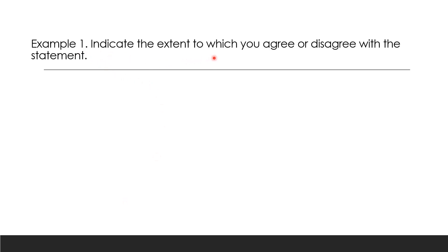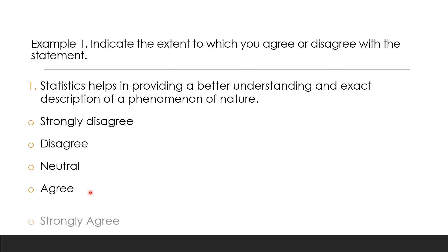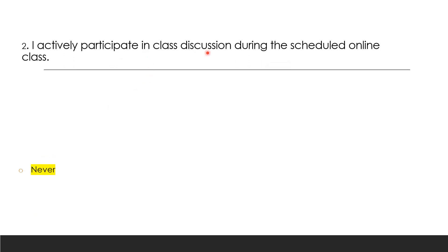Here is an example: indicate the extent to which you agree or disagree with a statement. For instance: 'Statistics helps in providing a better understanding and exact description of phenomena in nature.' The choices are: strongly disagree, disagree, neutral, agree, and strongly agree. Question number two: 'I actively participate in class discussion during scheduled online class.' You may answer: always, often, sometimes, rarely, or never.